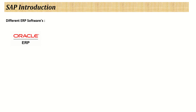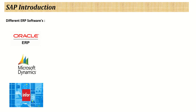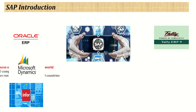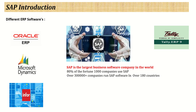Now let's see what different ERP software are available in the market. There are many ERP vendors — like Oracle ERP, Microsoft Dynamics, Infor, and Tally ERP. But the most popular and successful ERP software in the world is SAP ERP. SAP ERP is the largest business software company in the world — almost 80% of the Fortune 1000 companies use SAP ERP. They have 300,000+ customers running on SAP ERP software in over 180 countries. SAP ERP is the leading provider in business software.